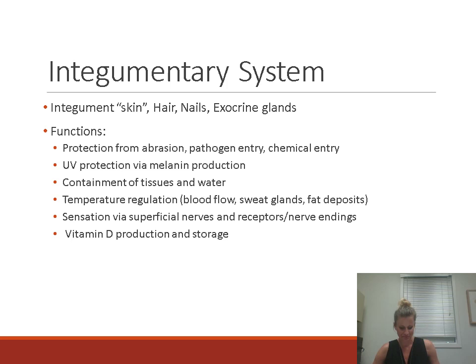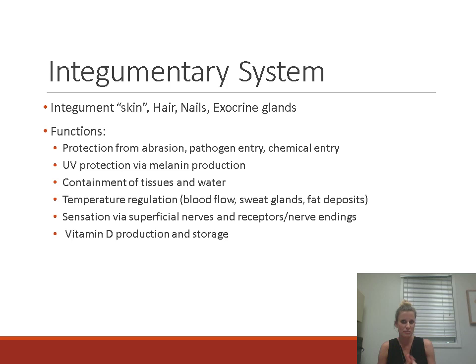The integument is the skin, so the integumentary system includes the skin as well as structures that stem from it: hair, nails, and some exocrine glands — sweat glands, sebaceous or oil glands, and ceruminous glands that produce cerumen or earwax. These exocrine glands associated with the integumentary system are included in this study.